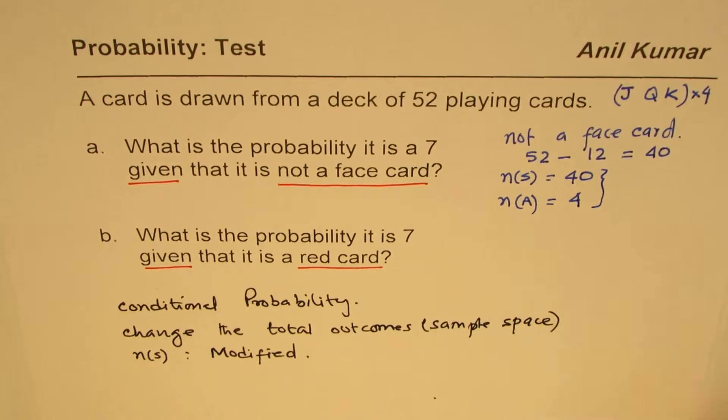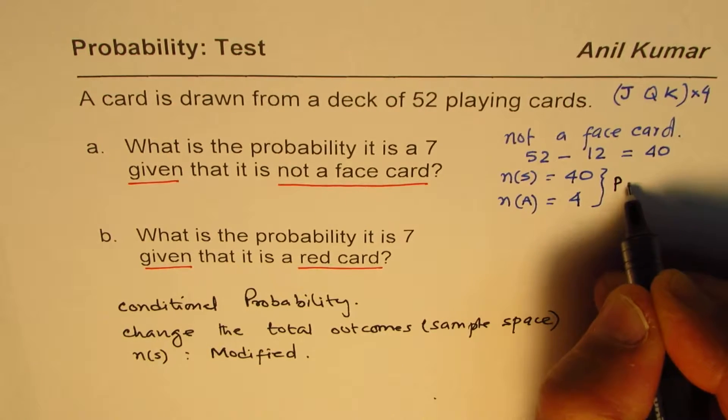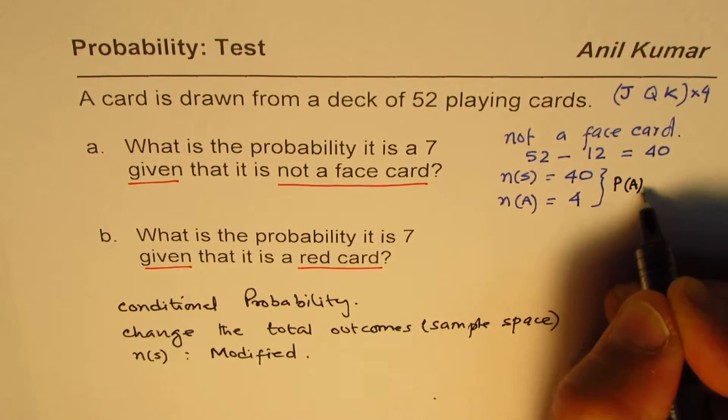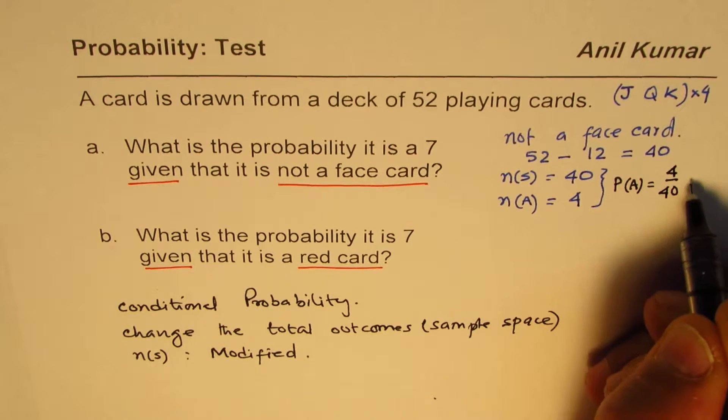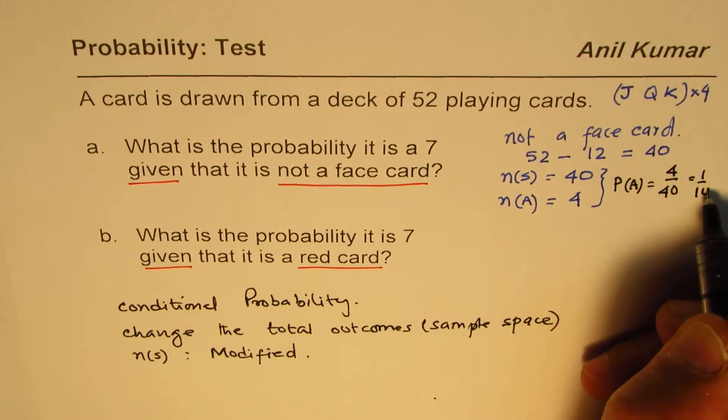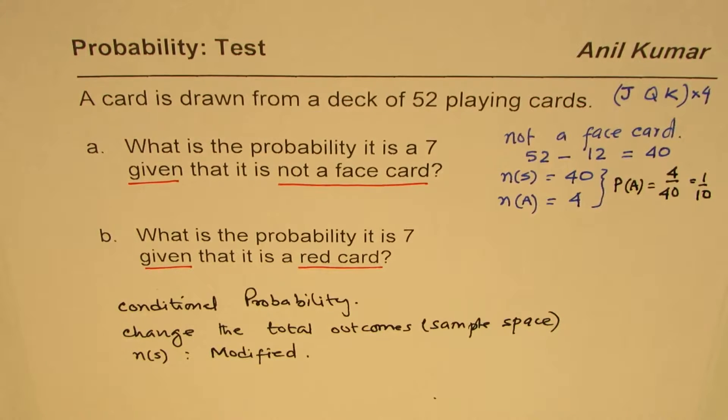In this particular case, we can easily write probability of event A is 4 over 40 or 1 over 10. So that is how you can explain and write down the answer.